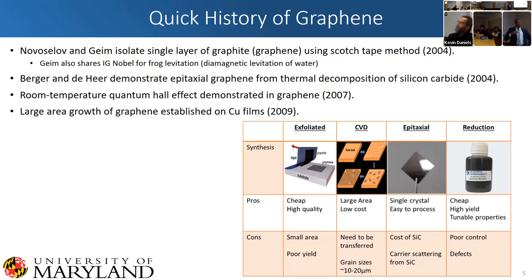The way they were growing graphene was basically having the material under vacuum and heating it up. Now we grow epitaxial graphene by having a little bit of argon in the system, which helps reduce the amount of silicon sublimation. You can get really nice high-quality graphene that, in my opinion, rivals that of exfoliated graphene — but we'll get into that.